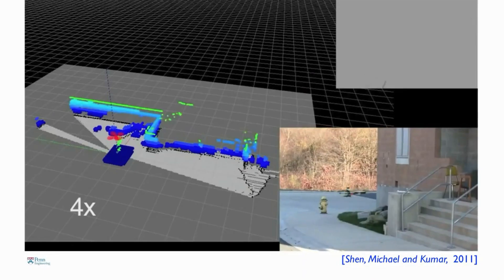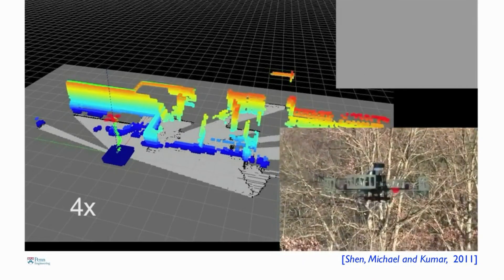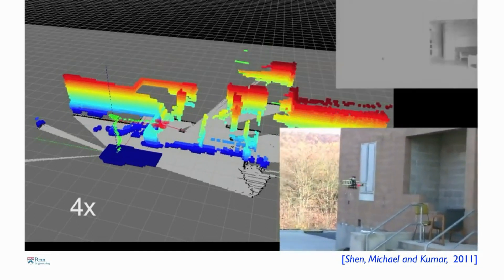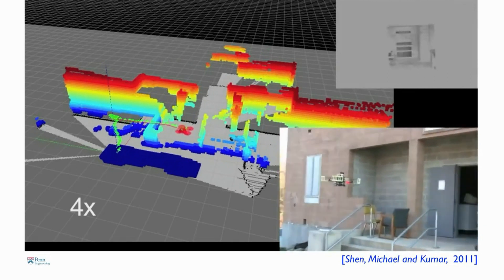I want to show you a clip of algorithms developed by Frank Shen and Professor Nathan Michael that shows this robot entering a building for the very first time and creating this map on the fly.